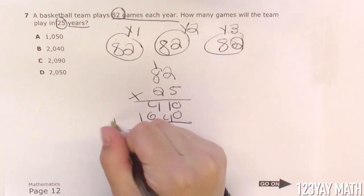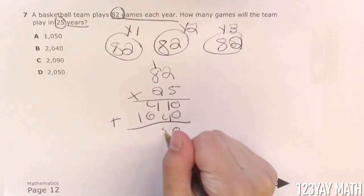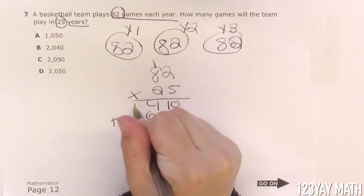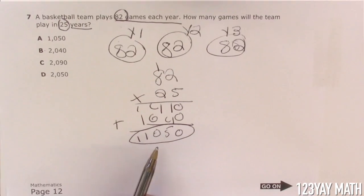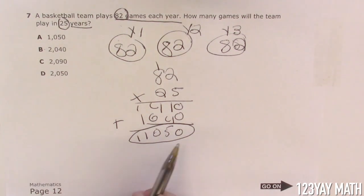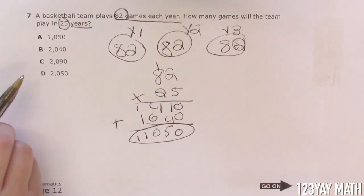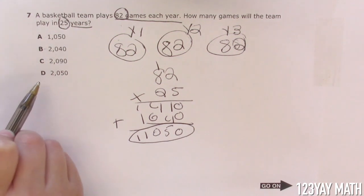Now we're going to add all of that together. 0, 5, 10, and 11. That should be the answer that we see. Let's try to look for the answer. I don't see 11,050. So I might have made a silly mistake.